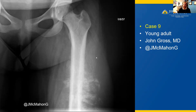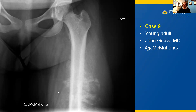Here we have a young adult with a plain film radiograph showing a neoplasm of the left thigh. We have these radio densities growing on what appears to be the surface of this long bone, with these perpendicular arrays radiating out into the soft tissues both laterally and medially in this anterior-posterior view. You can see these perpendicular lines — the so-called hair-on-end pattern, which is a periosteal reaction.